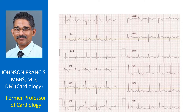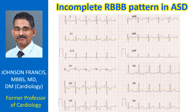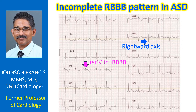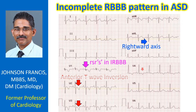ECG showing incomplete right bundle branch block pattern seen in atrial septal defect. The mean QRS axis is rightward and there is an RSR'S' pattern in V1. The T wave inversion seen in leads V1 to V4 can be just a juvenile pattern or part of the IRBBB. The IRBBB pattern was thought to be due to hypertrophy of the crista supraventricularis.